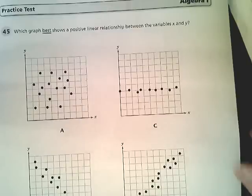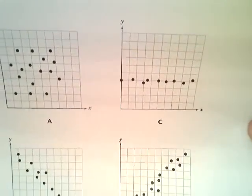This is the Tennessee practice test for the end of course for Algebra 1. This question is number 45. Number 45 says, which graph best shows a positive linear relationship between X and Y?